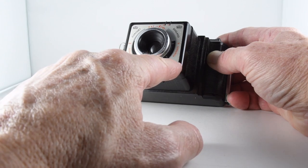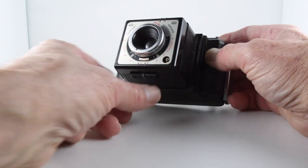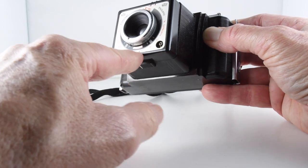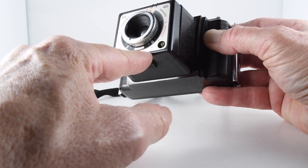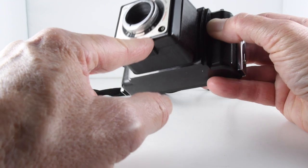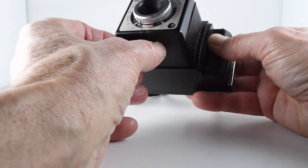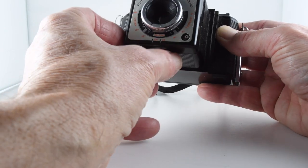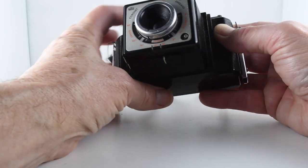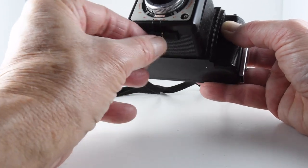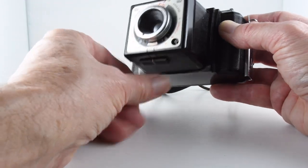Then we have the flash synchronization port. We have two shutter speeds: one one hundredth and one thirtieth, and we change it with this little slider. Now I'm not sure whether it works or not, we'll see. I suspect it may not but never know, it could work.